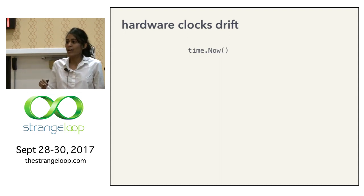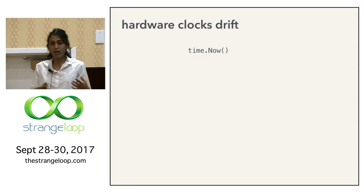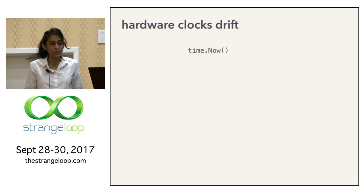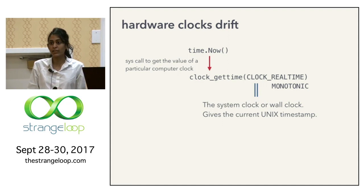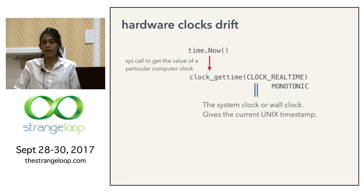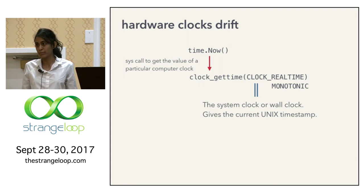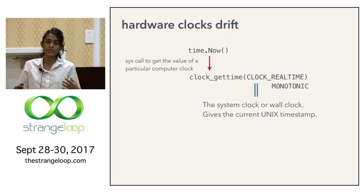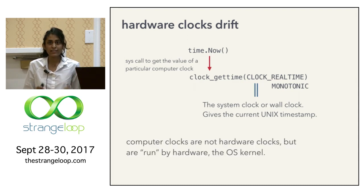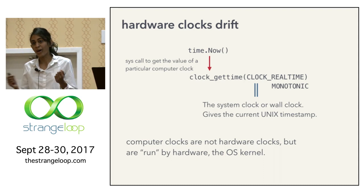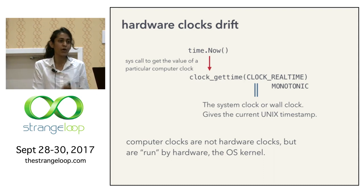When you run a command like `date` or call something like `time.Now()` to get the time from your favorite programming language, this translates to a system call to get the value of a particular computer clock. We have different computer clocks: the system clock or wall clock, the monotonic clock, the monotonic raw clock, and others. All of these computer clocks are software-based, but they are run by hardware clocks in conjunction with the operating system kernel.